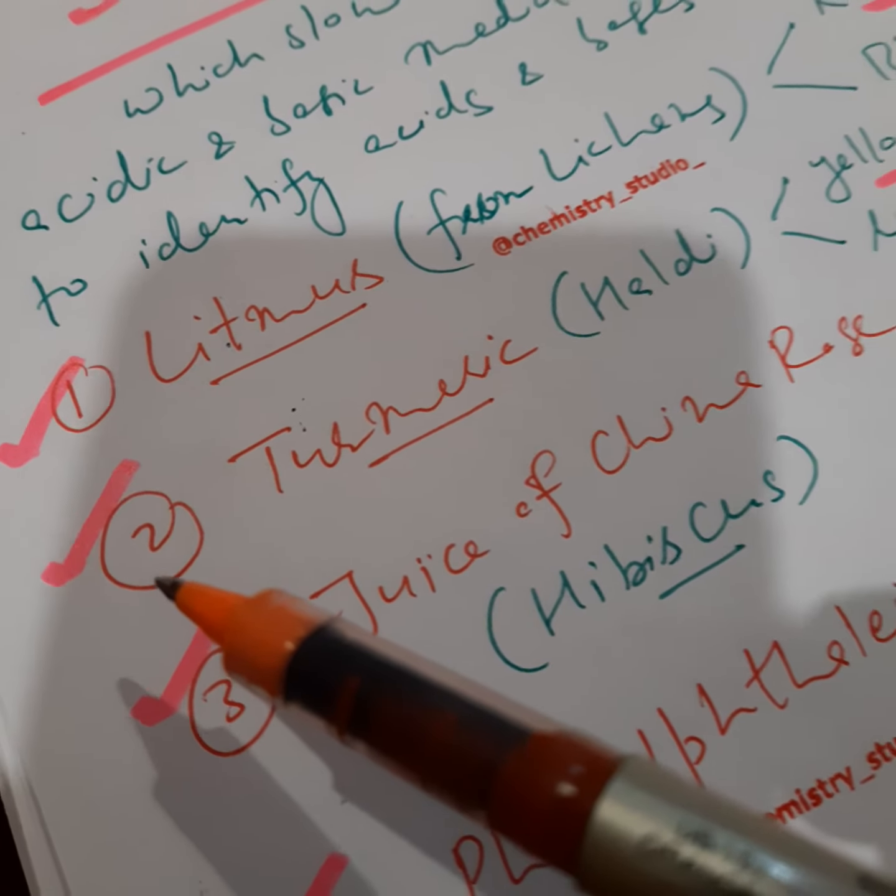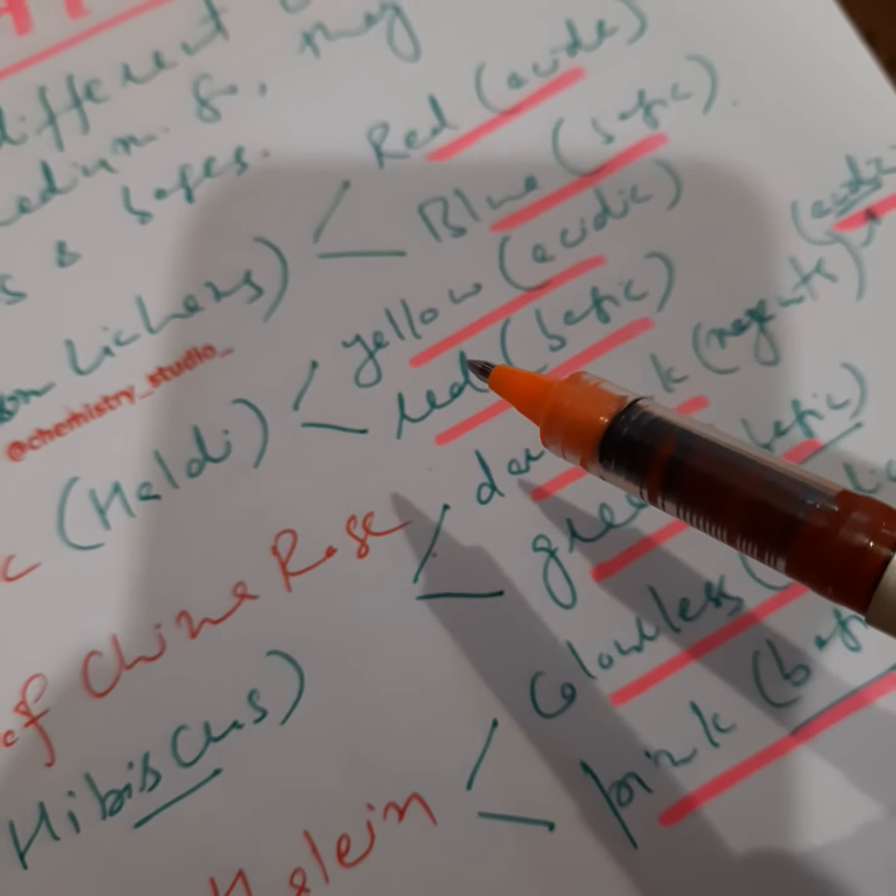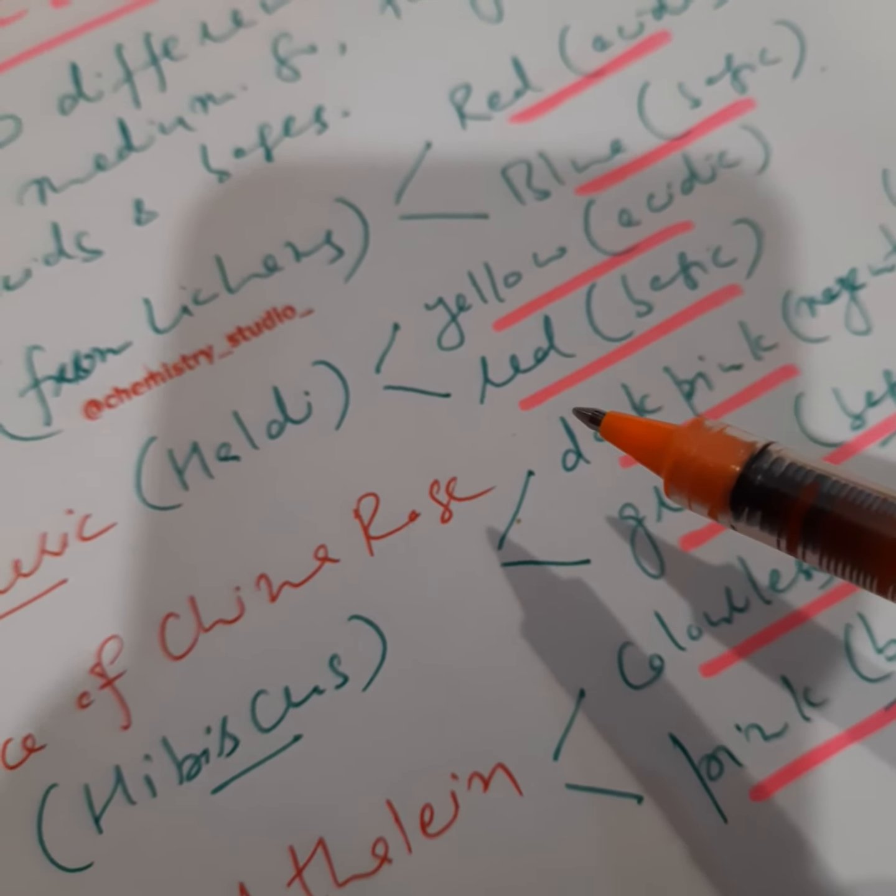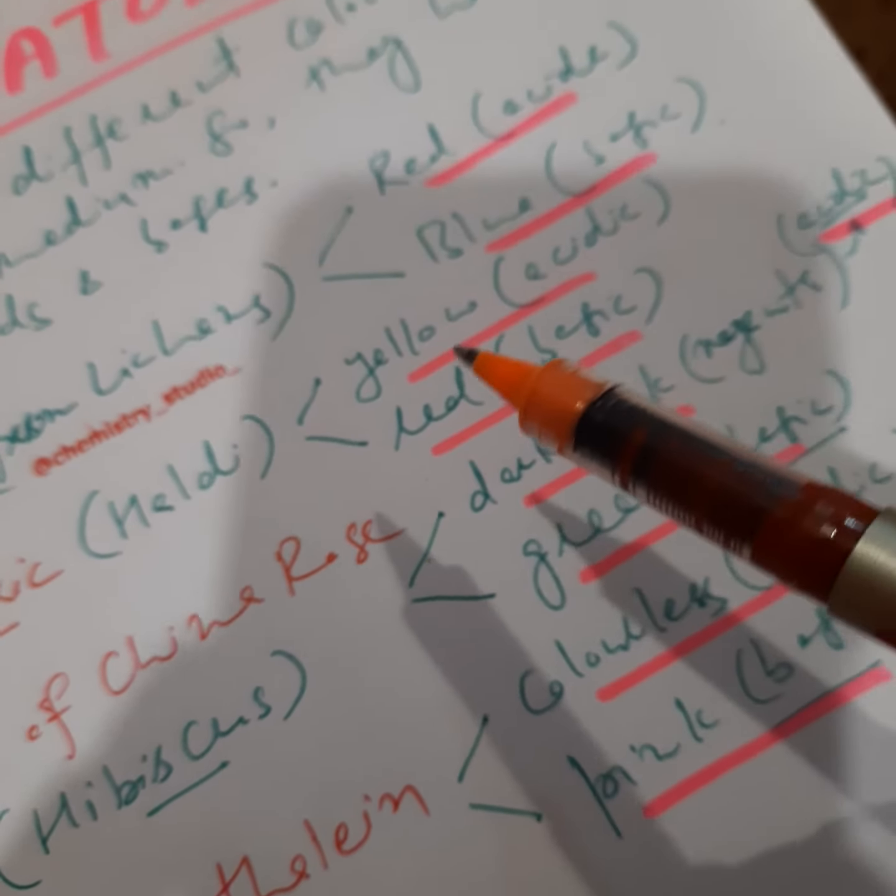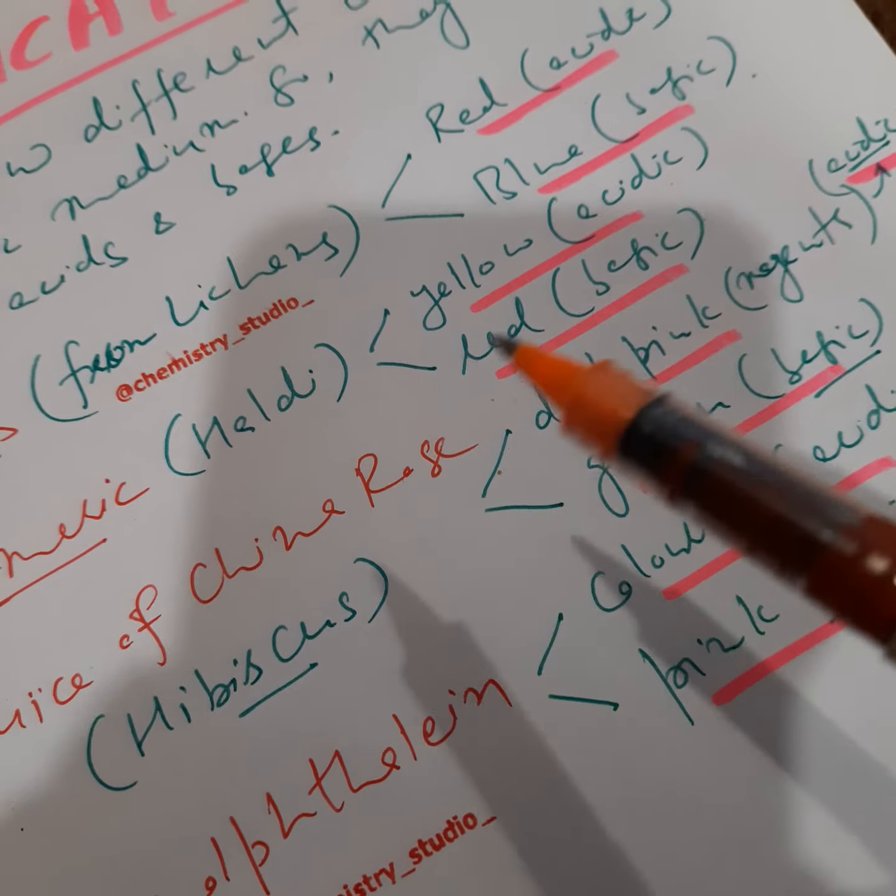Next we talk about turmeric, which is also called haldi in common household language and is a famous spice used for cooking. It remains yellow in acidic medium and turns red in basic medium.